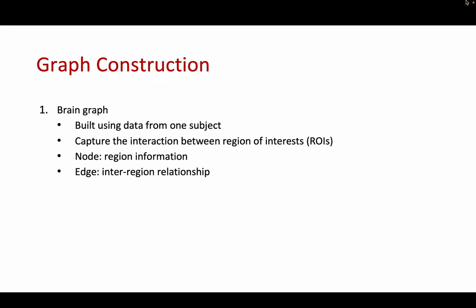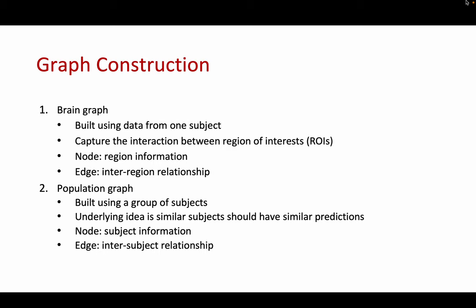We can construct graphs from neural imaging data using two methods. First, we can build a brain graph for every subject, whereby each node carries information from one region of interest and edges represent the relationship between ROIs. Another way is to build a population graph for a group of subjects, where each node carries information of one subject and edges represent relationships between different subjects. The intuition behind population graphs is that similar subjects should have similar predictions.